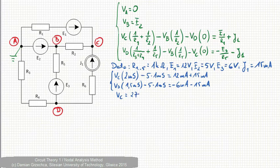minus 6 mA minus 15 mA. We have two unknowns and two equations. We can calculate Vc, which is 27 mA plus 5 mA divided by 2 mS. It gives 16 V,